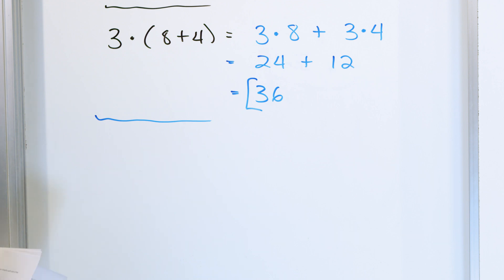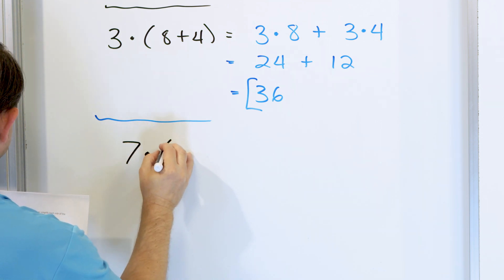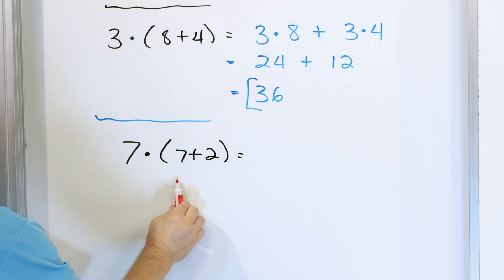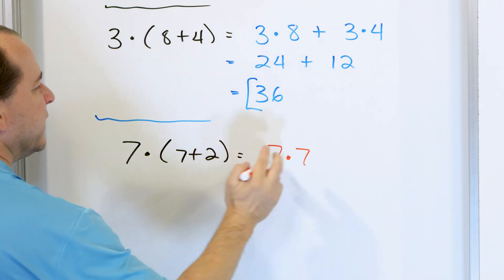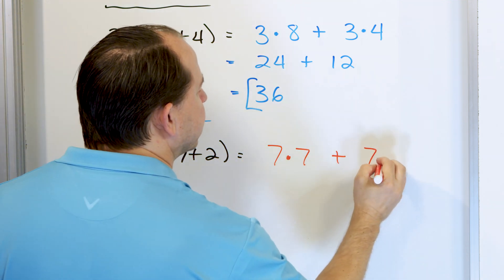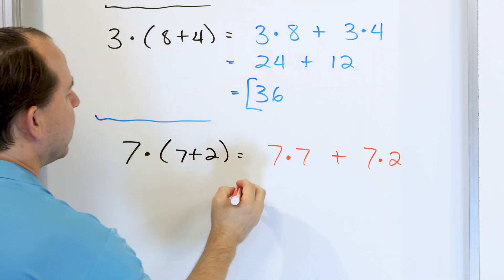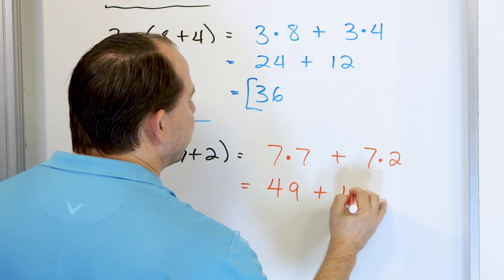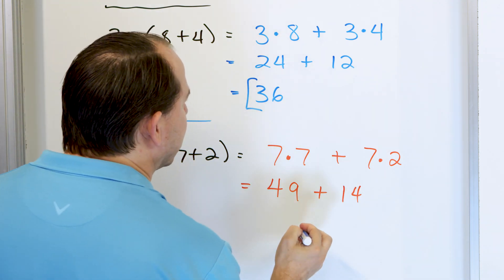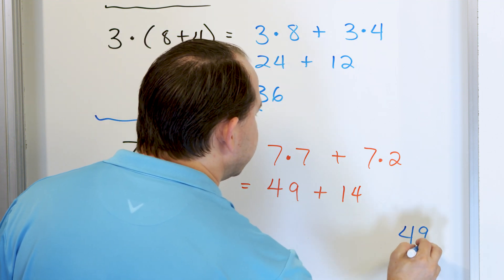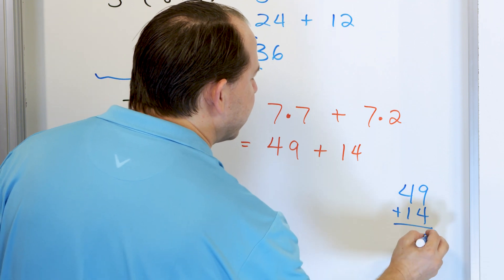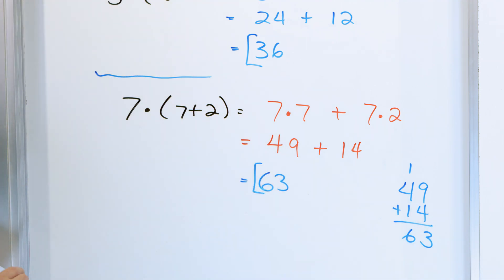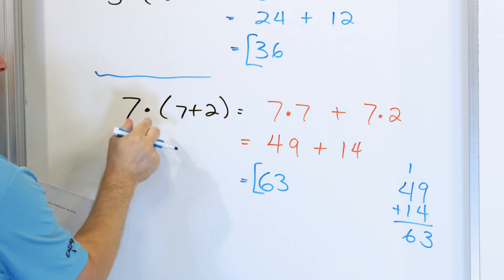One more problem: 7 times (7 plus 2). The 7 gets distributed in times the 7, plus the 7 times the 2. On the right-hand side, do the multiplications first: 7 times 7 is 49, and 7 times 2 is 14. Adding 49 and 14: you get 63. That's the final answer. Checking: 7 plus 2 is 9, and 9 times 7 is 63. Correct.